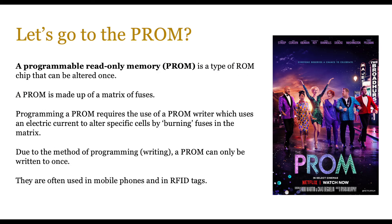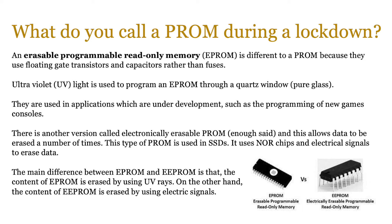Now let's move on to PROM. A programmable read-only memory is a type of ROM chip that can be altered once. It's made up of a matrix of fuses, and you need a PROM writer which passes electric current to alter specific cells by burning those fuses. Burnt fuses represent 0 and working ones represent 1, allowing you to write over the initial instructions. You can't rewrite a PROM — it can only be burnt once. These are found in mobile phones or RFID tags, set by the manufacturer, and then configured to user preference.